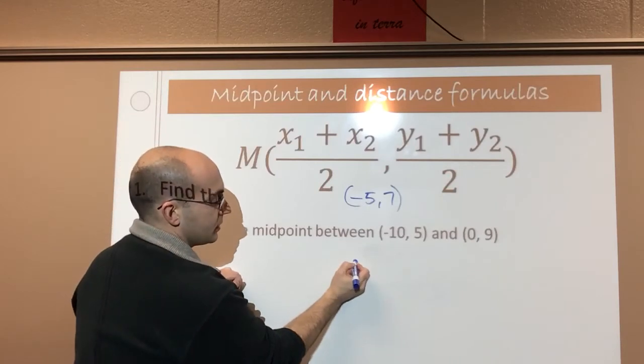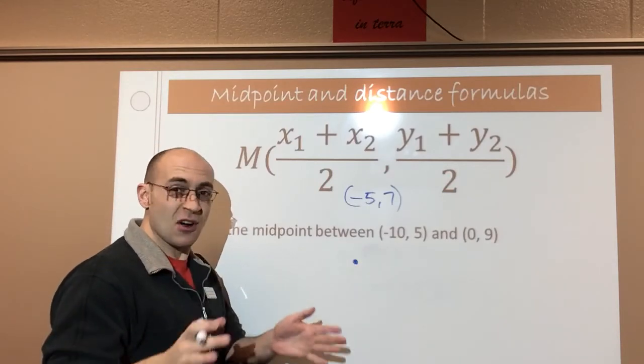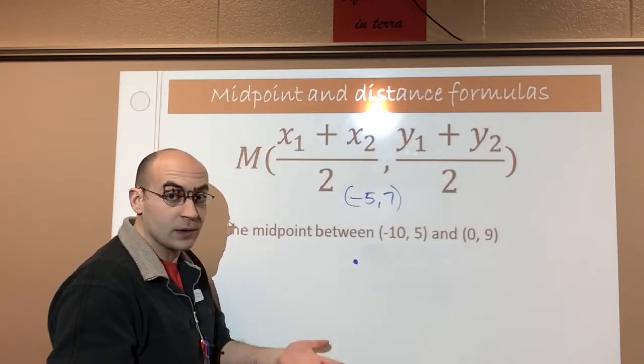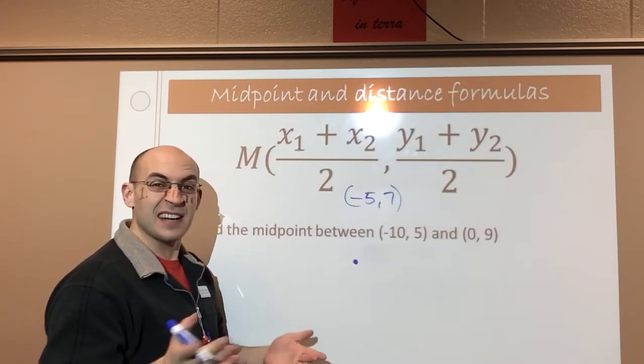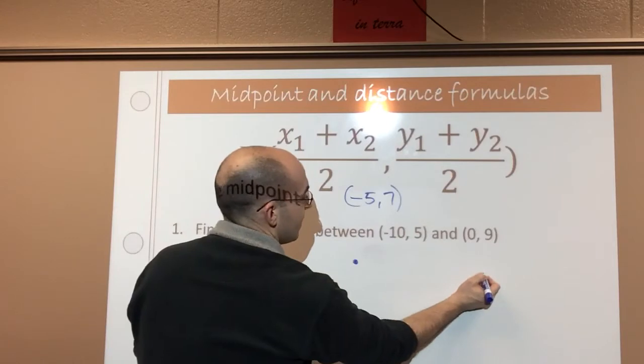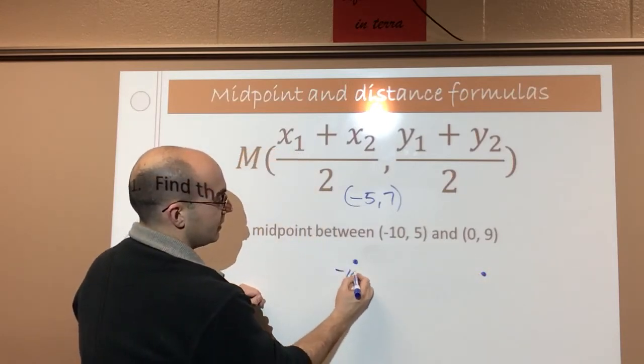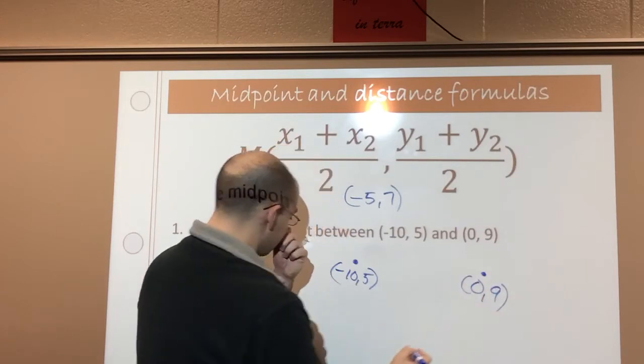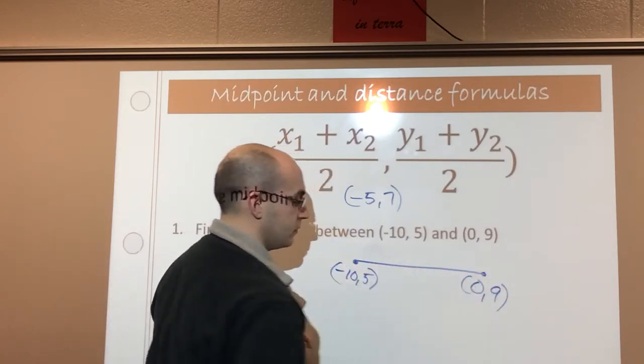So the other way to do this, the in-your-head way to do this is just draw a line. And it doesn't have to be on a coordinate graph. It can be anywhere else. It can be on the board. It can be on a piece of paper. It can be on your desk. Not really. Just clean it. And then make your other point here. So negative 10 comma 5 and 0 comma 9. So this is my line with my two endpoints.